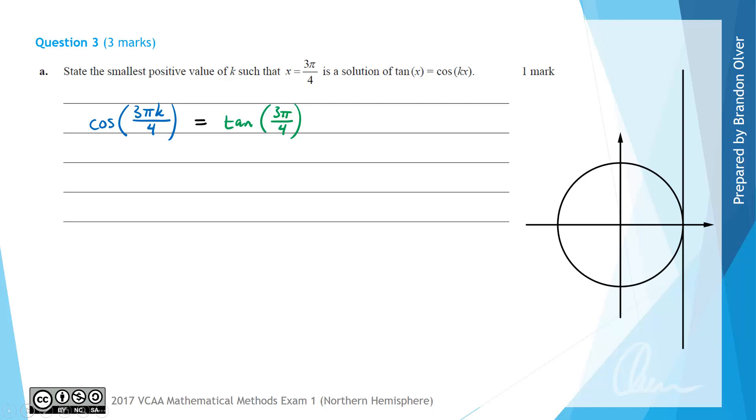Next up, we can think back to our unit circle. Now tan of 3π/4 sits here, and extending that back through into this quadrant, we can see that the exact value of tan(3π/4) is negative 1. So therefore, we have cos(3πk/4) is going to equal negative 1.